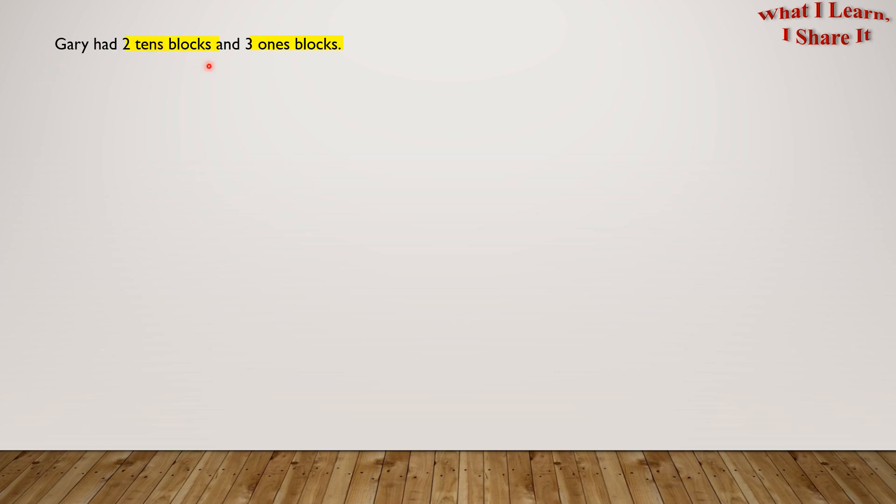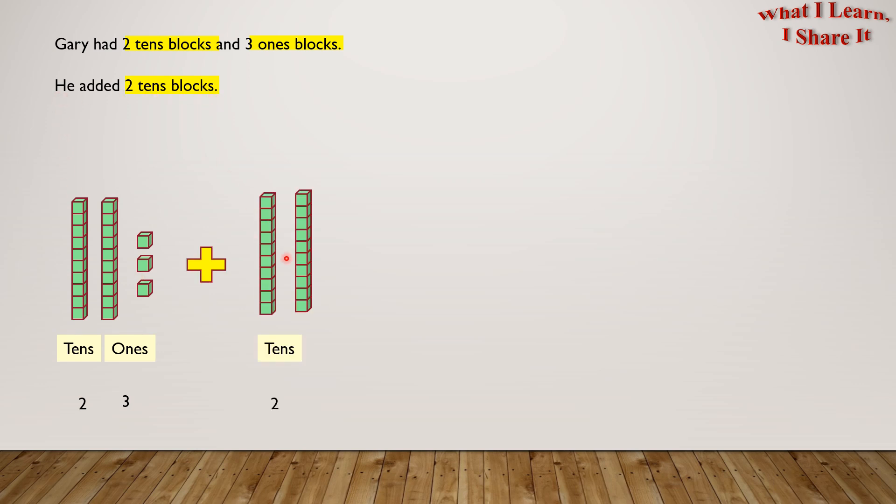Gary had 2 tens blocks and 3 ones blocks. These are the 2 tens blocks and the 3 ones blocks. He added 2 tens blocks. Here comes the 2 tens blocks.